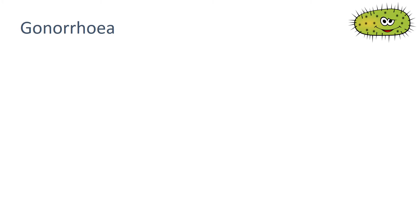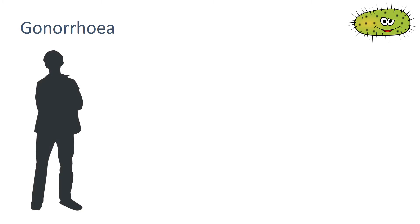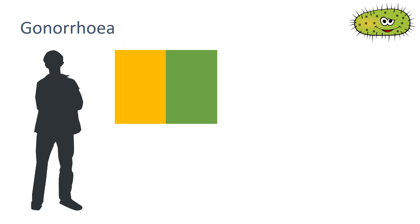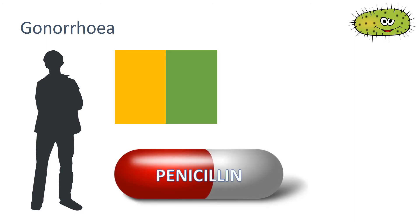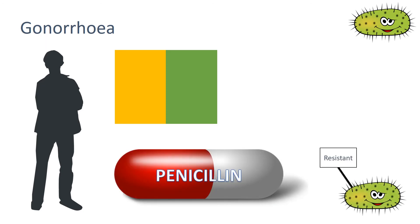Gonorrhea is a sexually transmitted disease with symptoms of a thick yellow or green discharge from the vagina or penis and pain whilst urinating. It's caused by a bacterium and was easily treated with the antibiotic penicillin until many resistant strains appeared. Gonorrhea is spread by sexual contact.